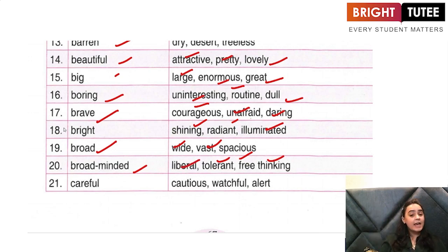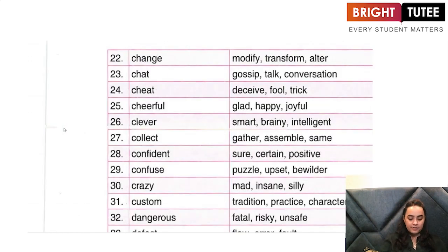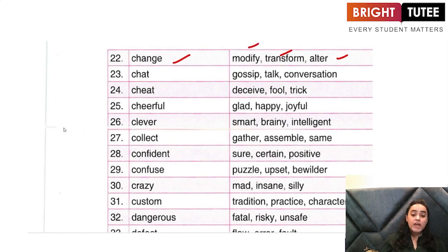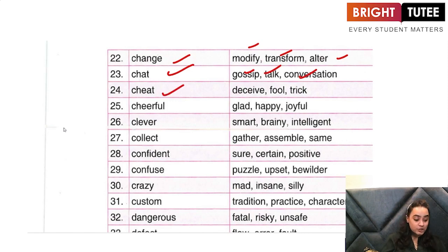'Careful' — the other words for careful: cautious, watchful, or alert. 'Change' — the other words for change: modify, transform something, alter something. 'Chat' — the other words: to gossip with somebody, to talk to somebody, to have a conversation with somebody. 'Cheat' — the other words for cheat: to deceive someone, to fool someone, to trick someone.